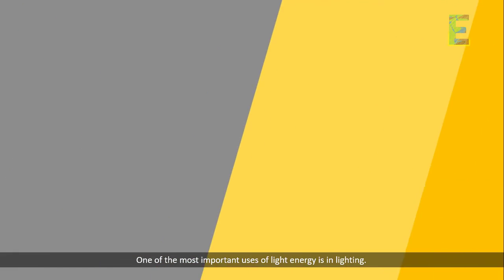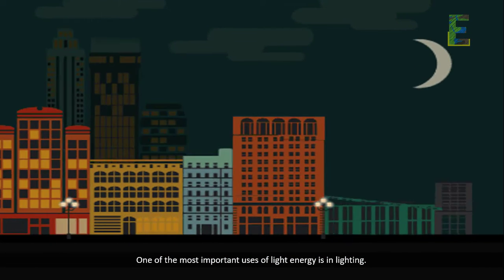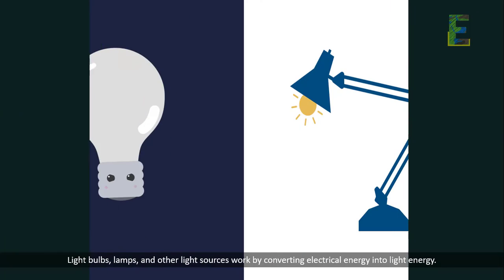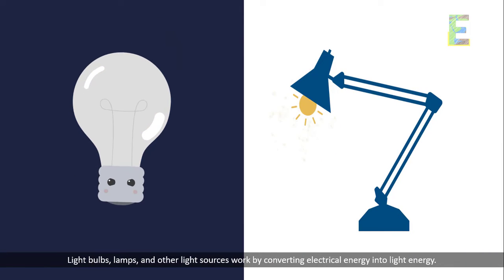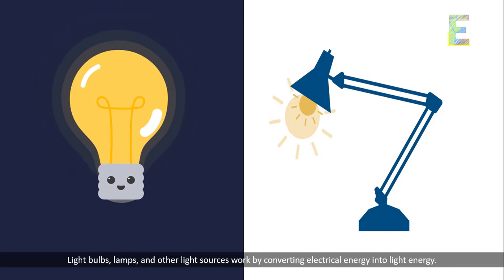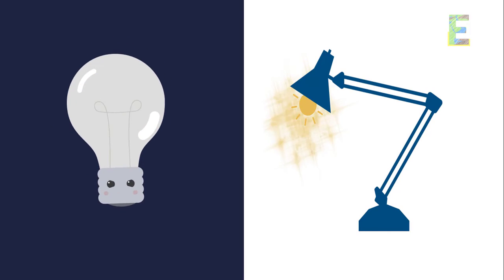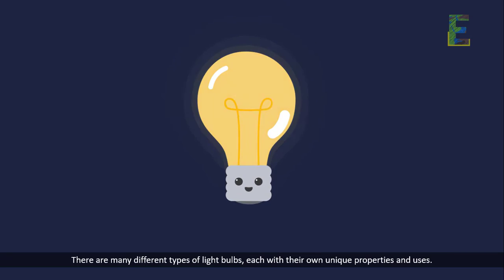One of the most important uses of light energy is in lighting. Light bulbs, lamps, and other light sources work by converting electrical energy into light energy. There are many different types of light bulbs, each with their own unique properties and uses.